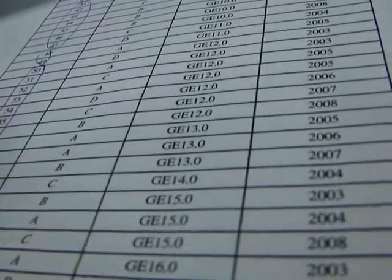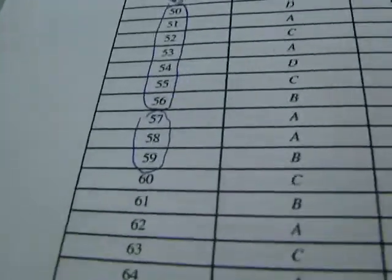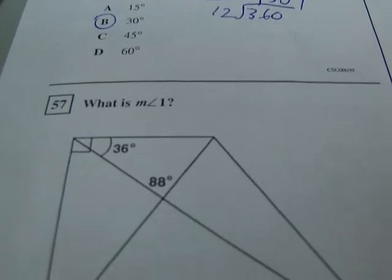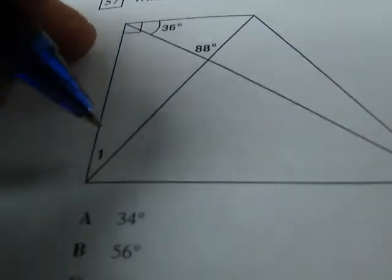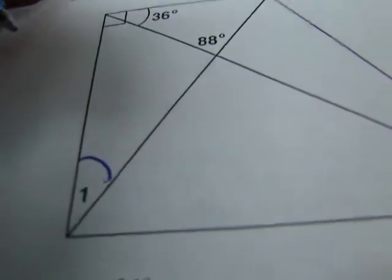We see that Standard 13 will represent problems 57 to 59. So, let's look at problem 57. It says, what is the measure of angle 1? So, here's angle 1. And we want to know this.